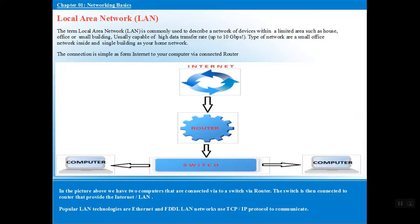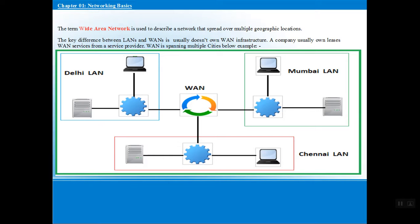LAN is a Local Area Network — sharing data between computers within a limited area or building. WAN, or Wide Area Network, covers data transfer between cities and countries. For example, cities like Delhi, Mumbai, and Chennai can connect their departments to share data and resources using WAN technology. All computers, internet connections, and ISPs are interconnected through our WAN network.